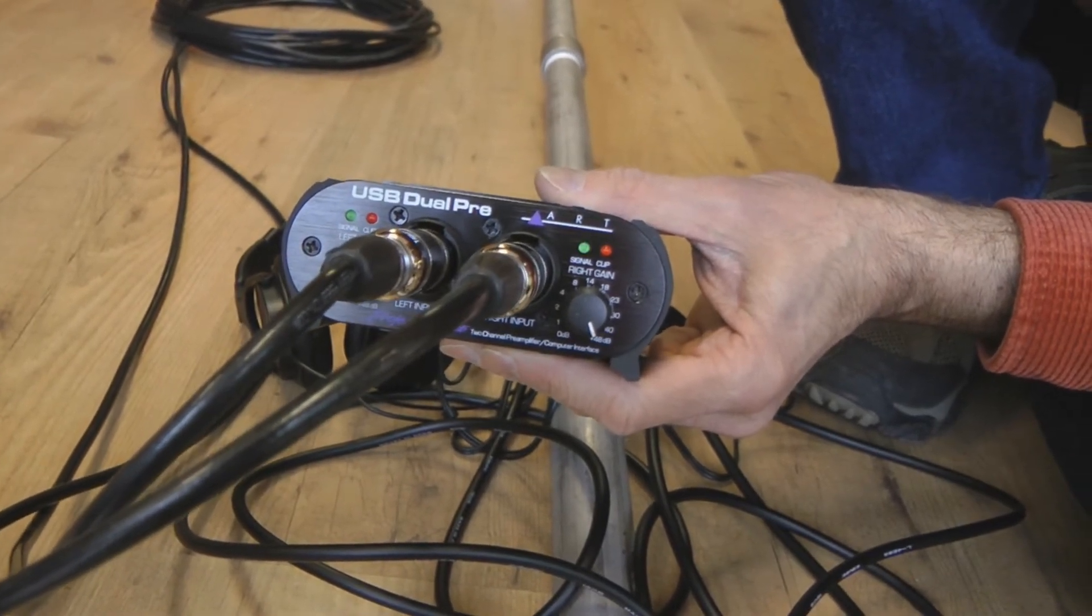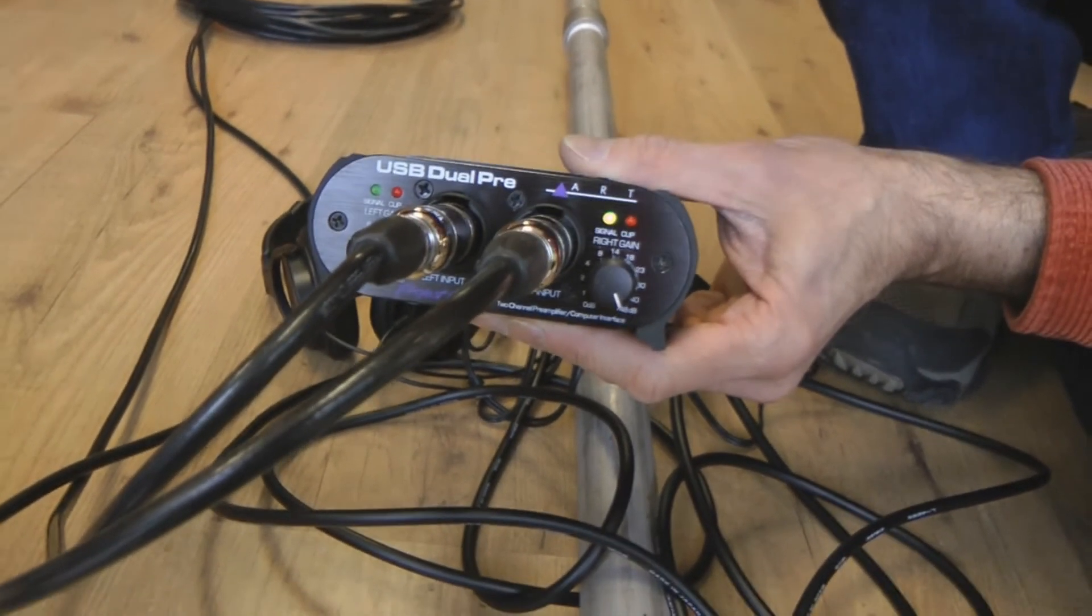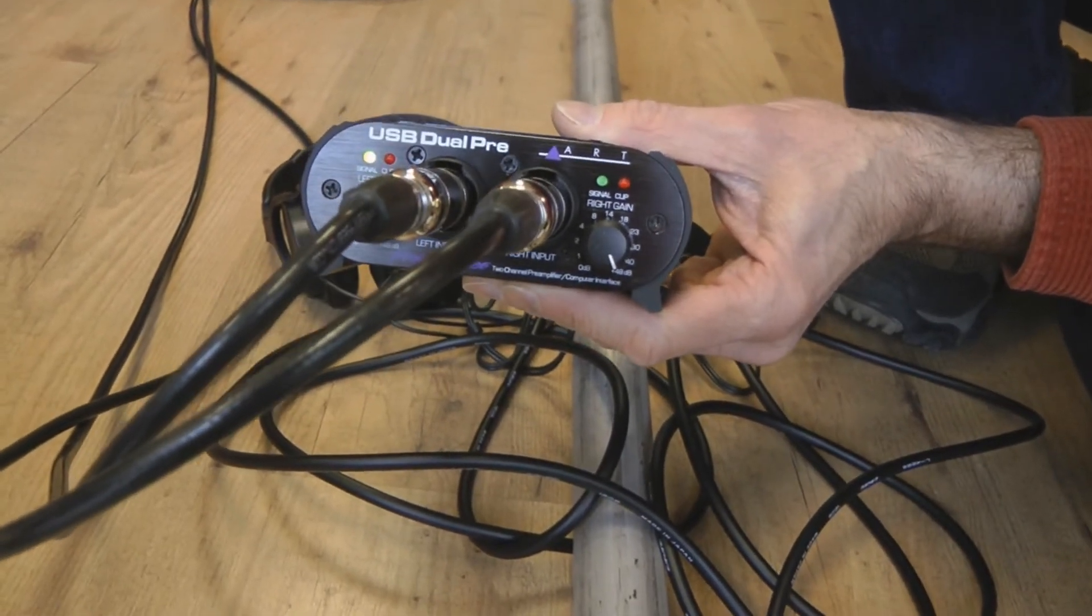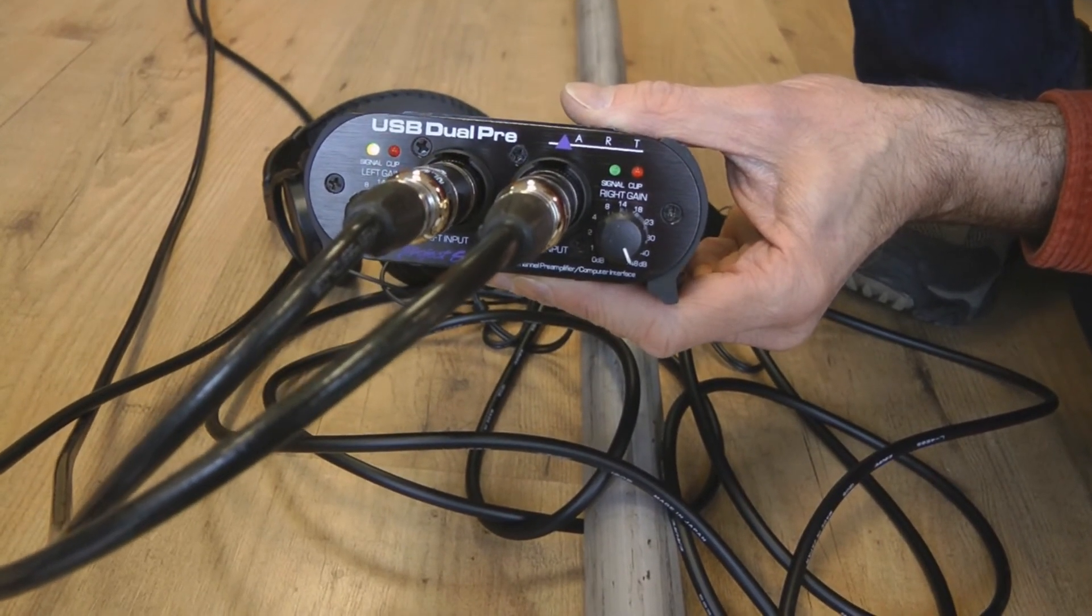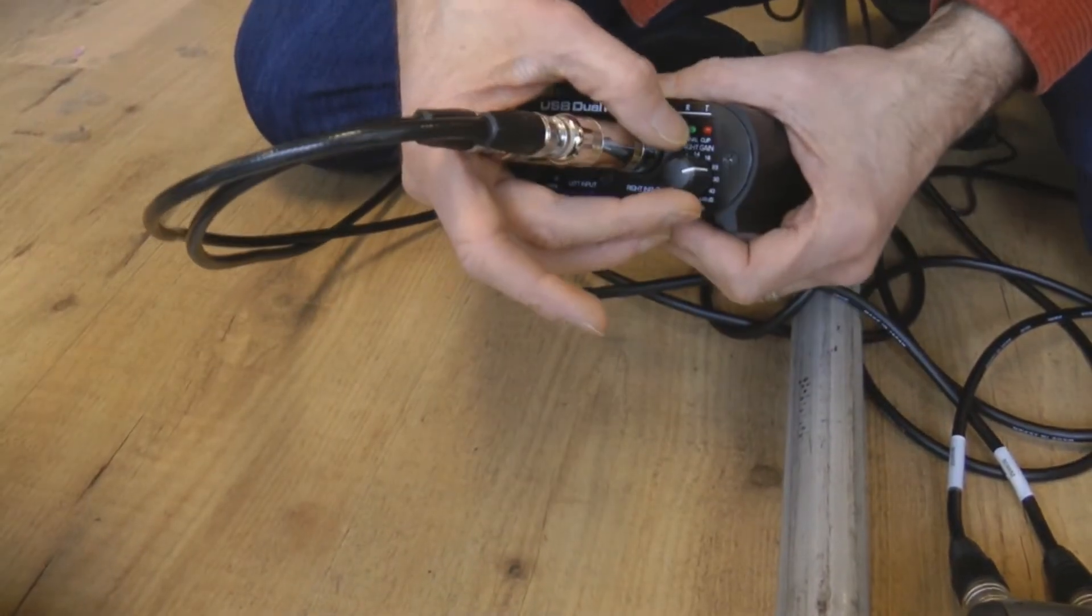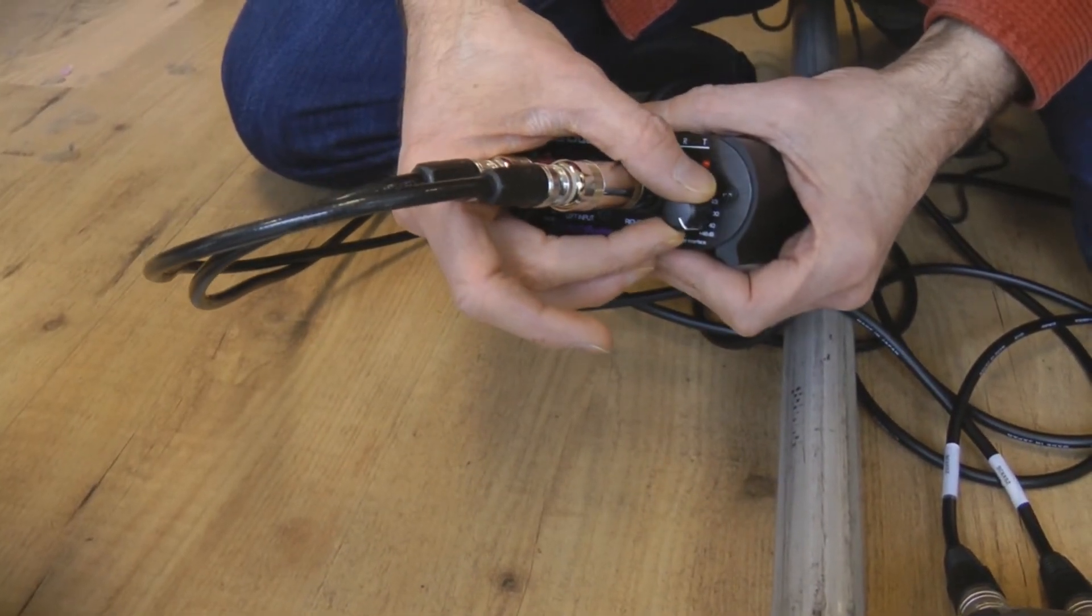You see that's the right one? And now the left and right. I overloaded it, actually. It was so loud. Green means it's getting close to overloading, and red means it's overloaded.